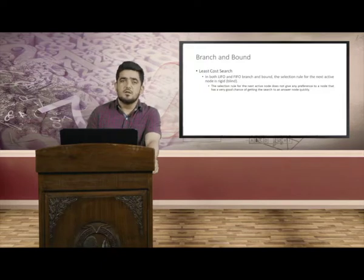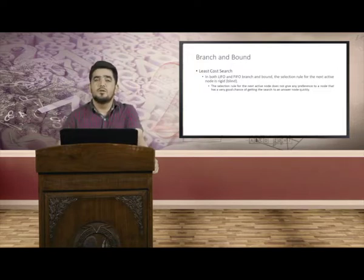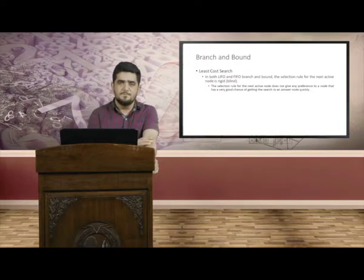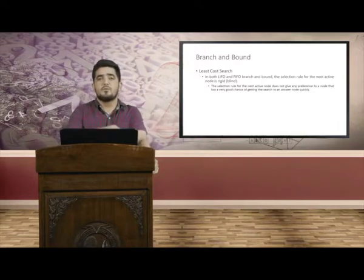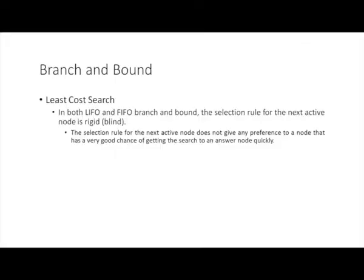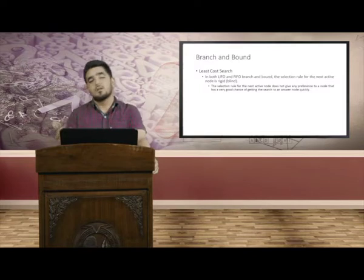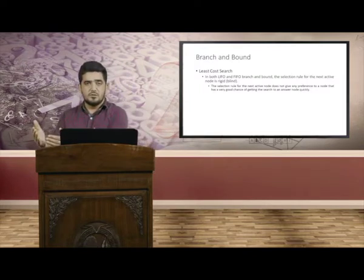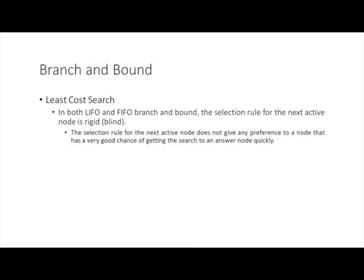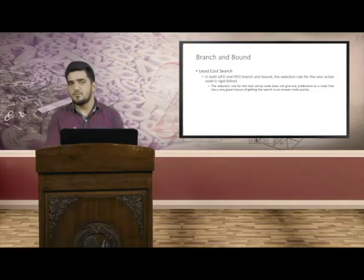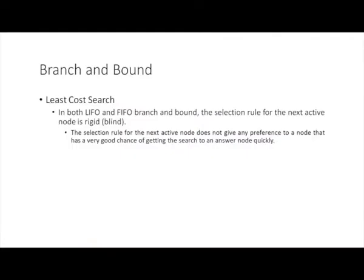In the FIFO strategy, the next active node is chosen from the front of the queue, and in the LIFO strategy the next active node is taken from the top of the stack. This is rigid — neither of these techniques gives any preference to a node which has a higher chance of leading to the solution node. The selection rule for the next active node is rigid or blind, and does not give any preference to the node that has a very good chance of getting the search to the answer node quickly.